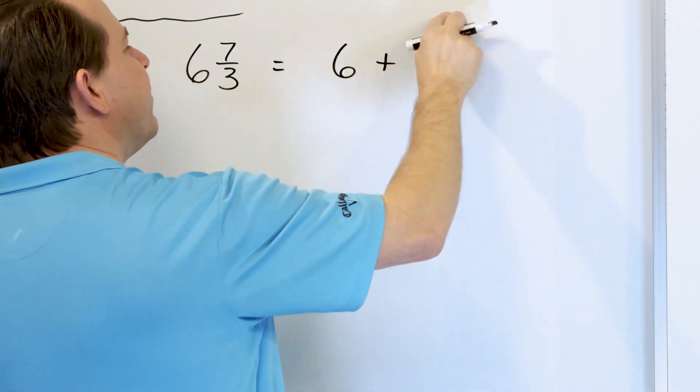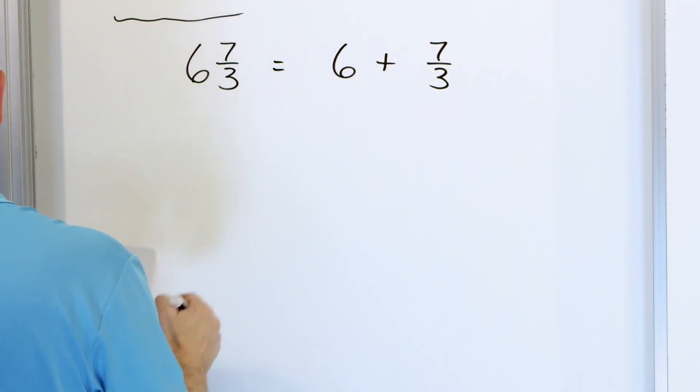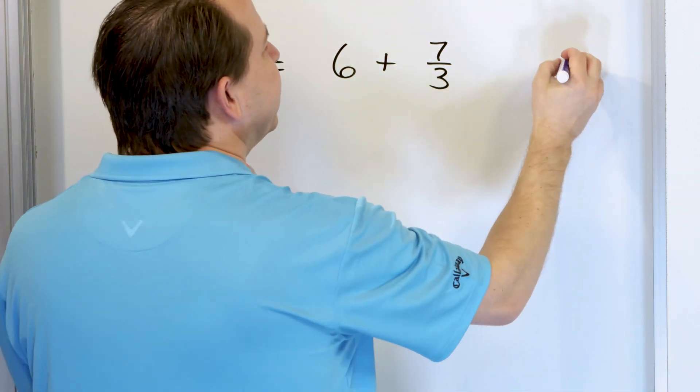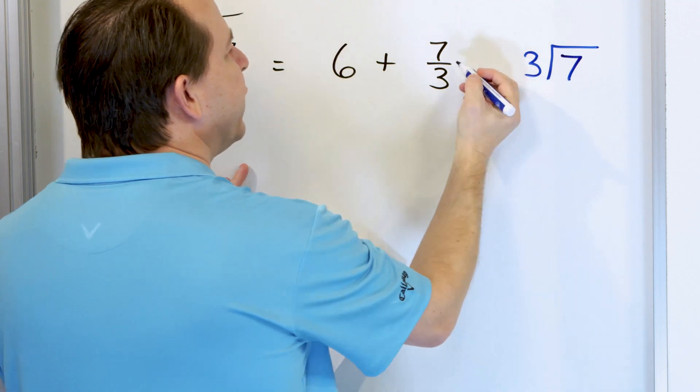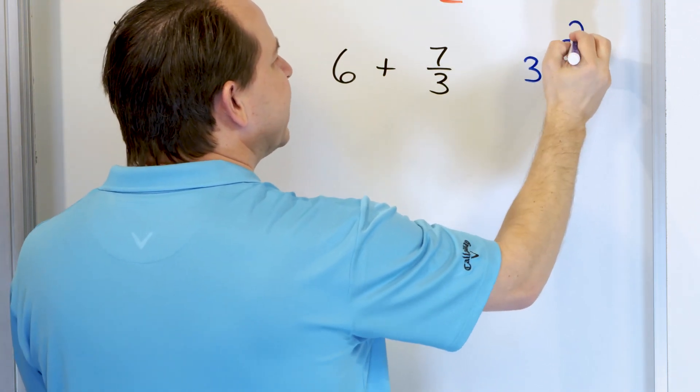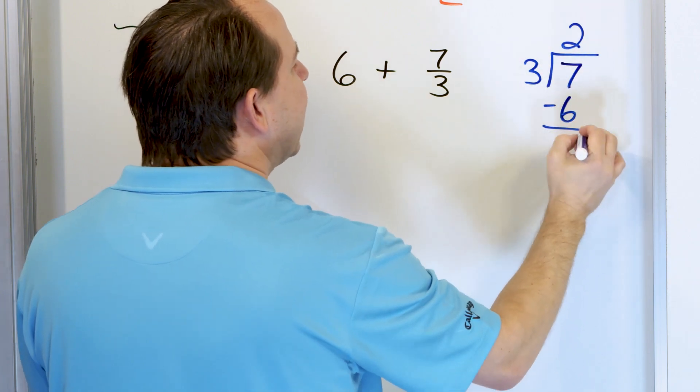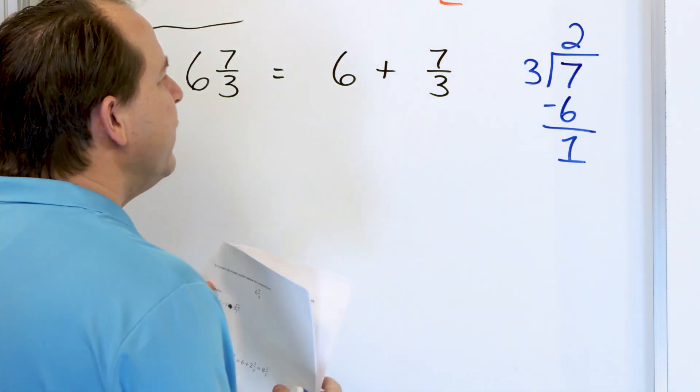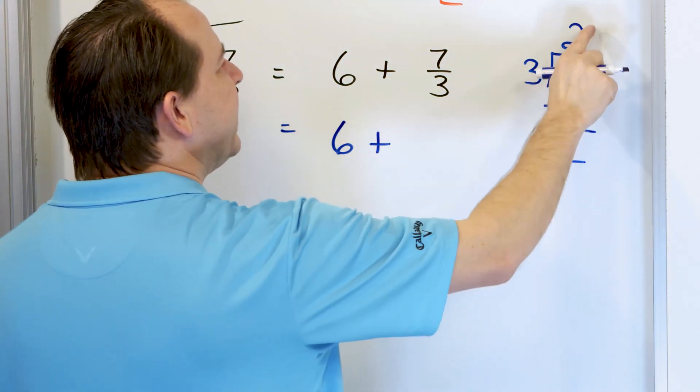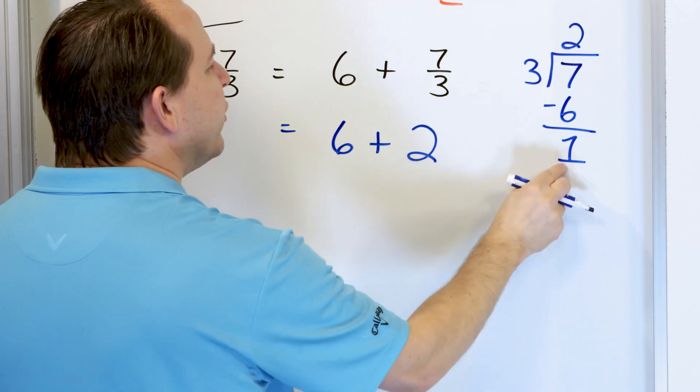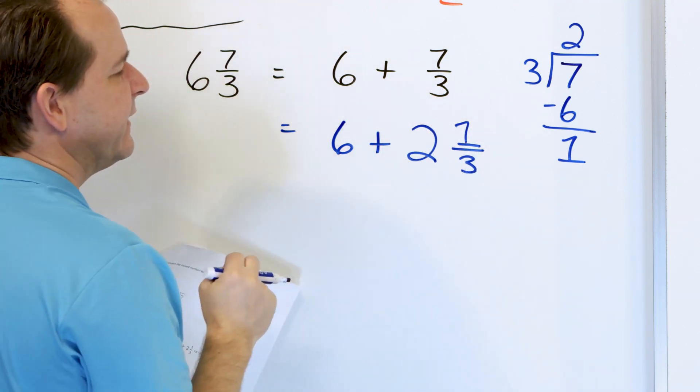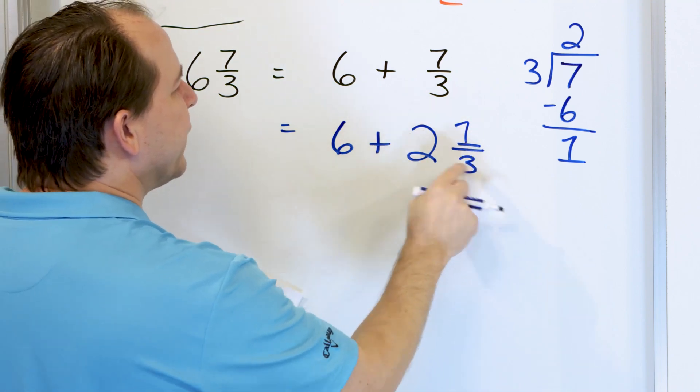This improper fraction can be converted to a mixed number, and we already learned how to do that. We use division, so we take 7 and divide it by 3. 3 times 2 is 6, that's as close as we can go. Subtract with a remainder of 1. So over here we have the 6, and then this gets converted into a whole number of 2 with a remainder of 1 out of 3rds, so it's 2 and 1/3rd.